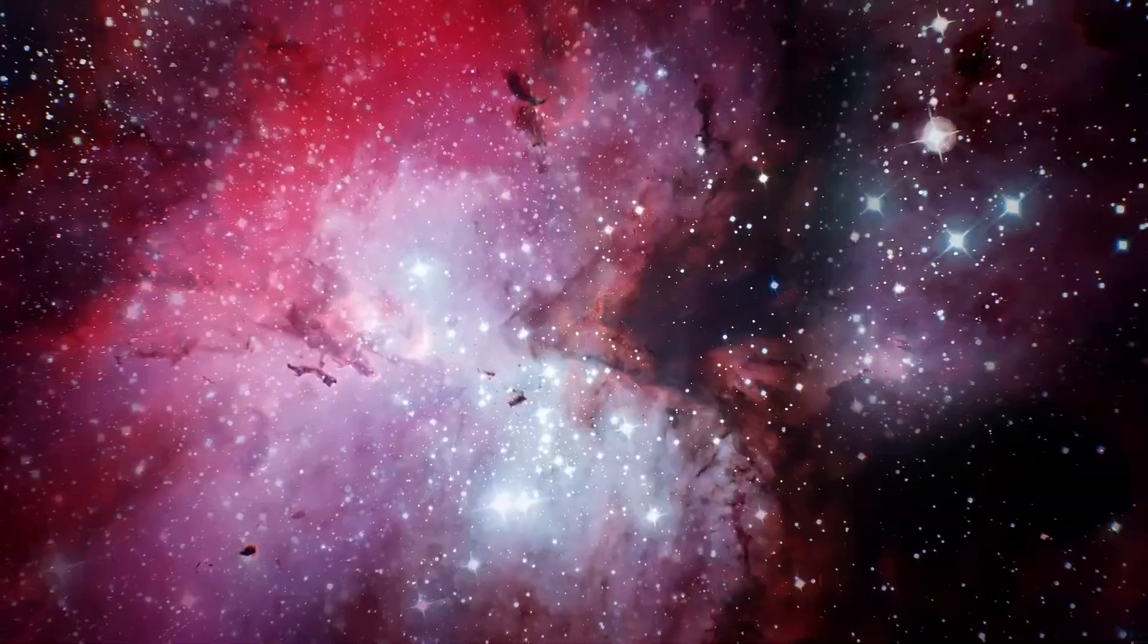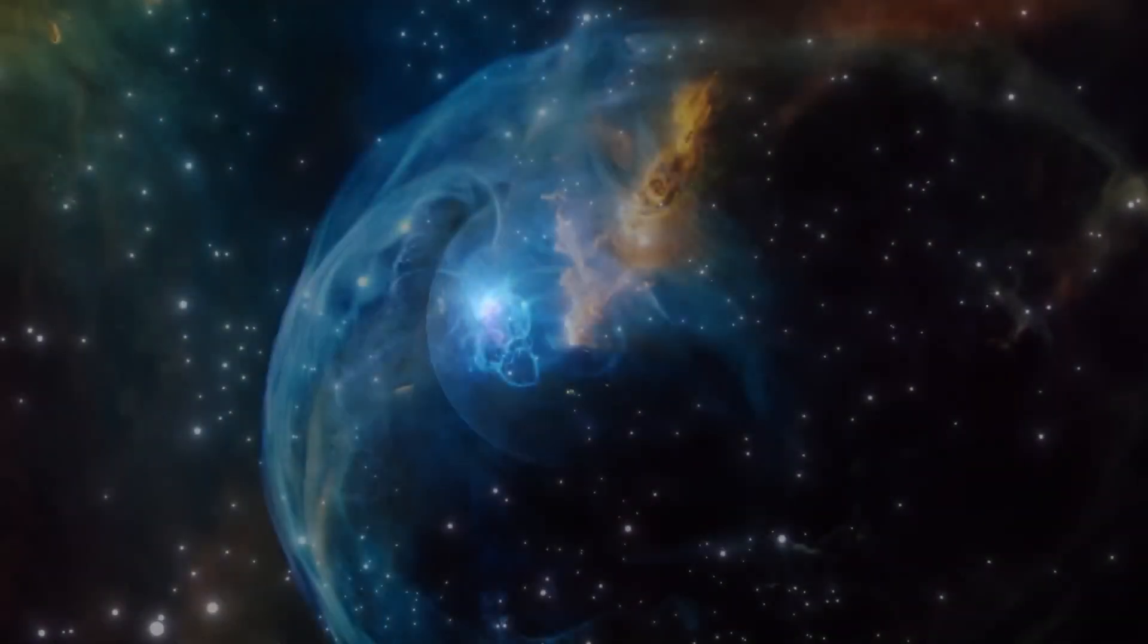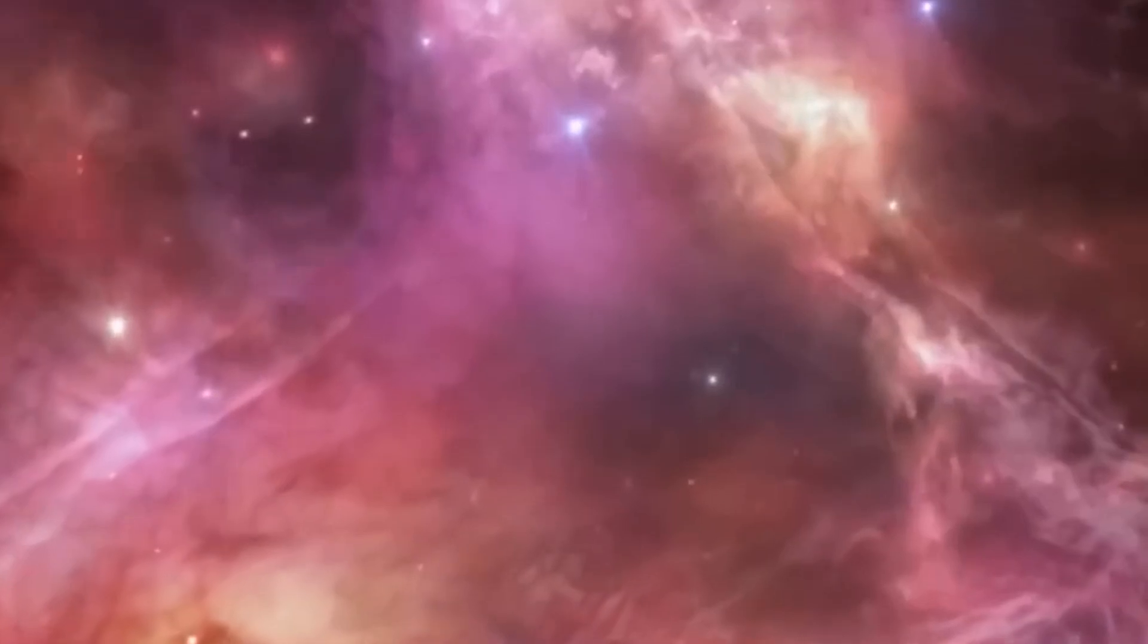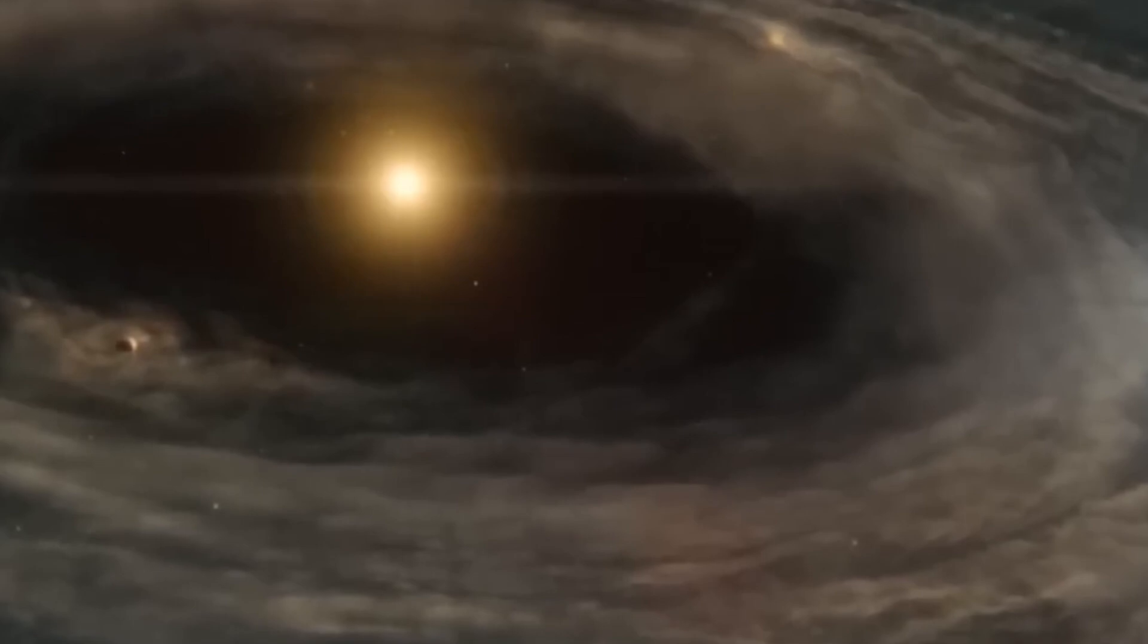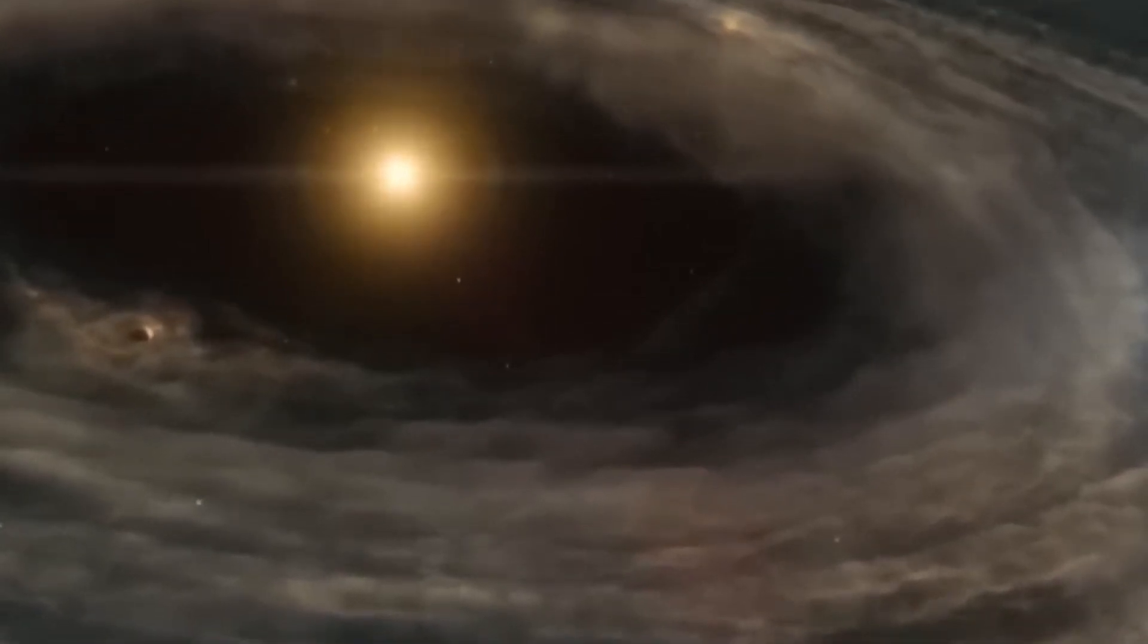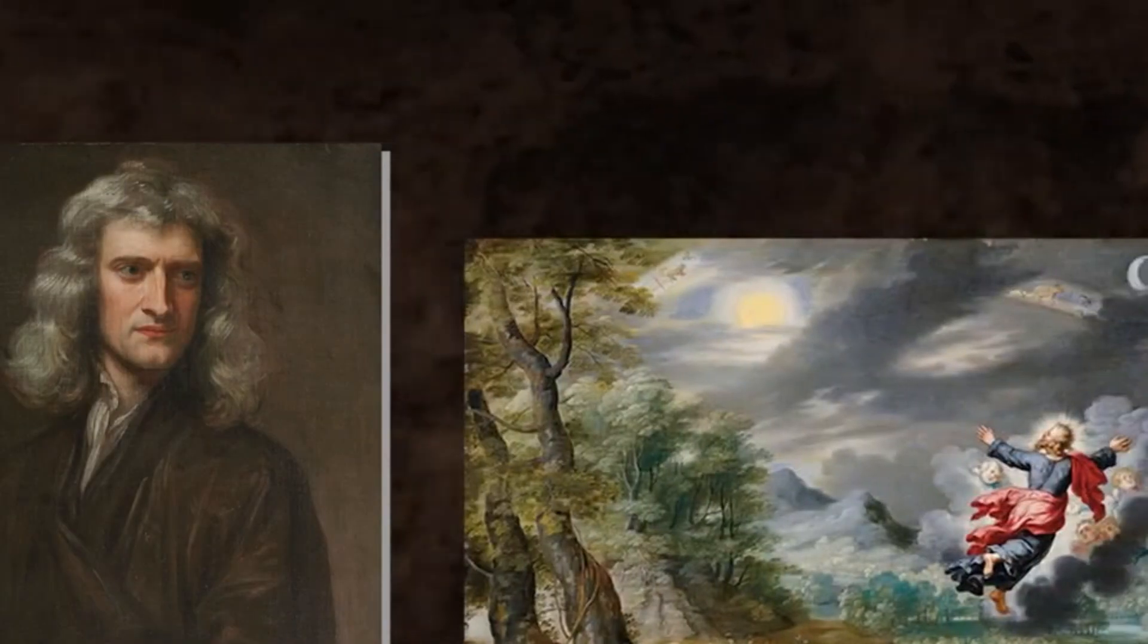Every possible combination of the laws of nature exists in different universes. So the reason we have to see a universe that allows us to exist is obviously because we couldn't exist in one that didn't. We could ask the question, well, how likely is that? Well, the answer is, if there are an infinite number of them, it's inevitable because there's every possible kind of universe.